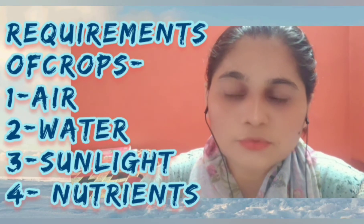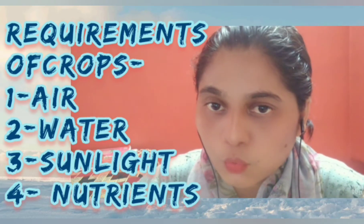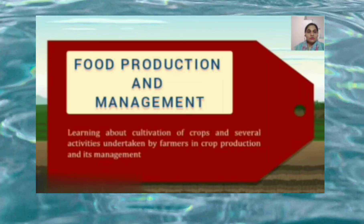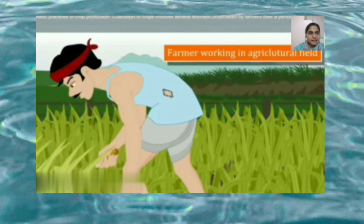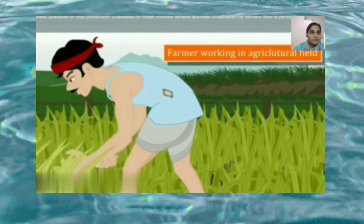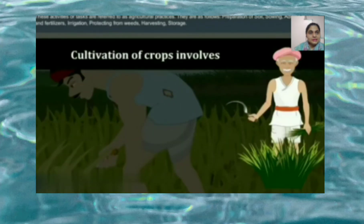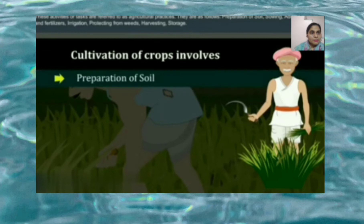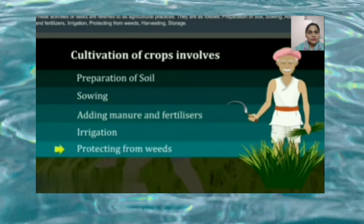Let us see what farmers do to ensure the healthy growth of crop plants. Cultivation of crops involves several activities undertaken by farmers over a period of time. These activities are referred to as agriculture practices. They are: preparation of soil, adding manure and fertilizers, irrigation, protecting from weeds, and harvesting.